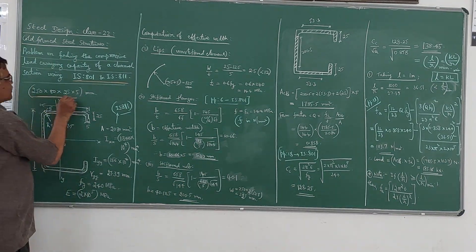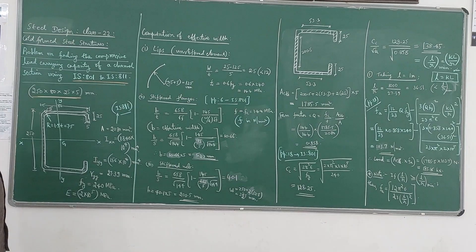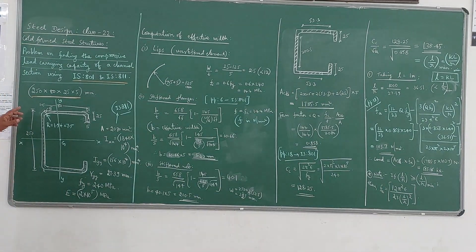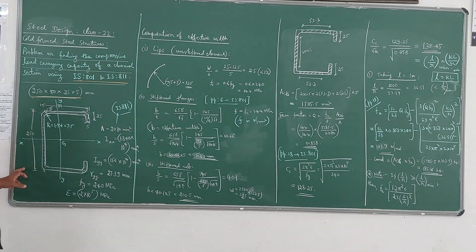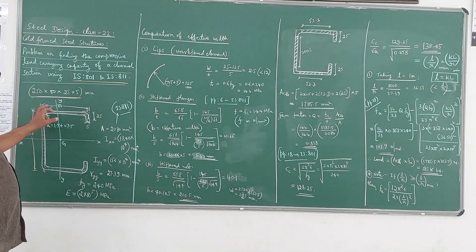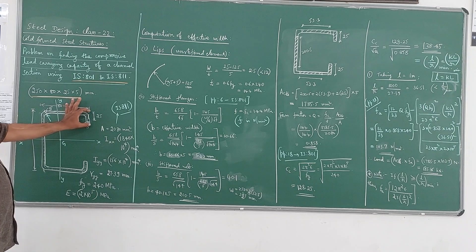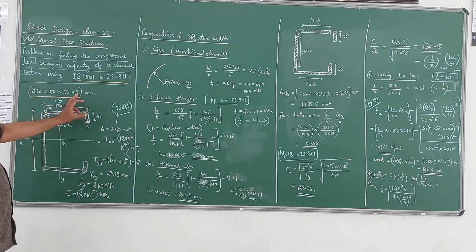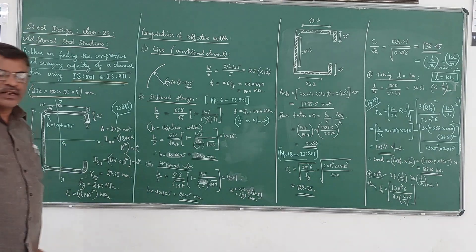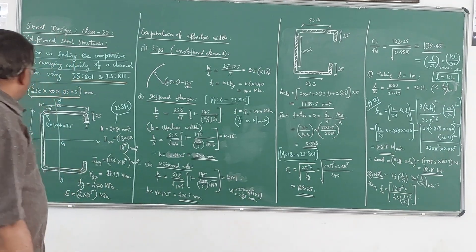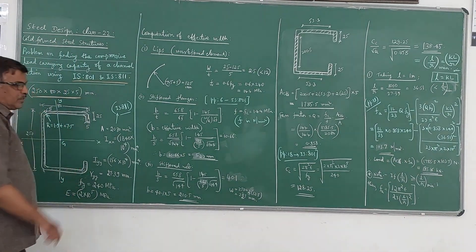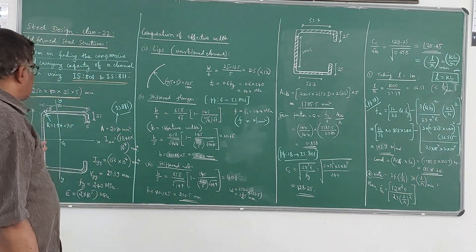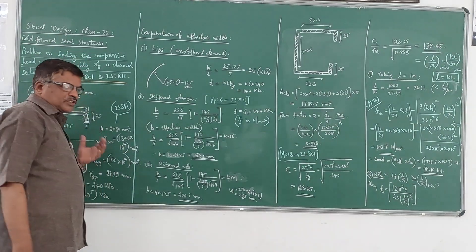I will take a section of dimensions 250 by 80 by 25 by 5 mm. So 250 is the total depth of the section, 80 is the width of the flange, 25 is the width of the lip, and 5 mm is the thickness. We have to compute the compressive load carrying capacity of this section.